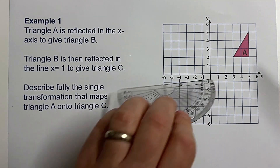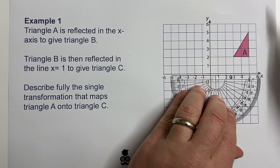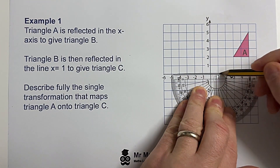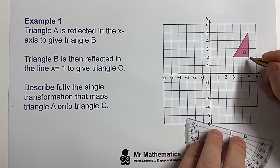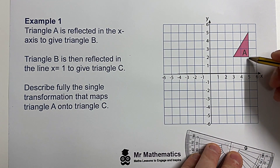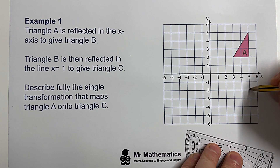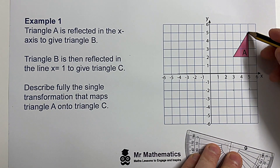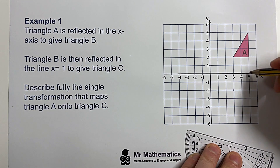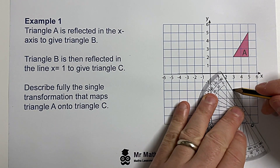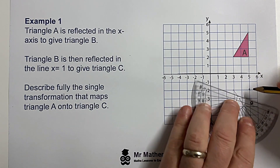— this is the line where y equals zero, so this line here. We reflect each vertex of the object through this mirror line. This point goes to here, this point goes to here, and this point goes five units away through the mirror line so it goes to here. Then we create the image, which we're going to label B.